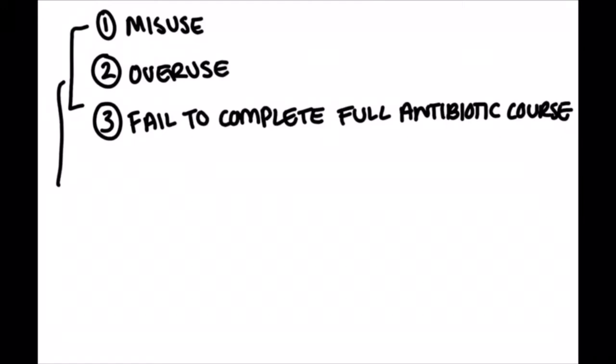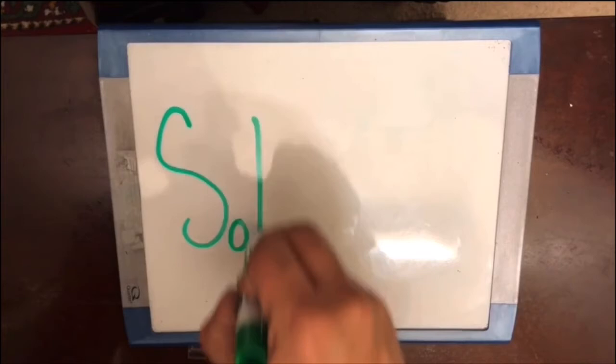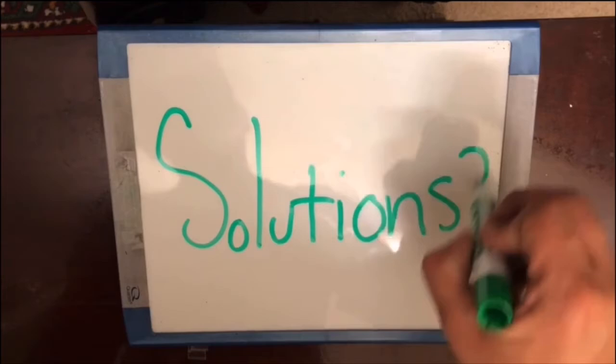Misuse, overuse, and the failure to complete the full course of antibiotics are also factors that account for the antibiotic resistance crisis that occurs today. So, how can we resolve this issue? Let's look at some solutions and things we can do to fix the antibiotic crisis.